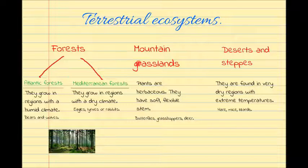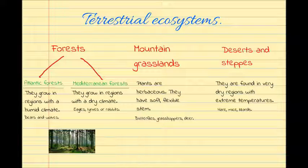Mountain grasslands: here plants are herbaceous, which means that they have a soft, flexible stem. You will find butterflies, grasshoppers, and deer.